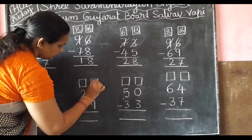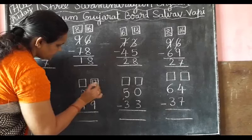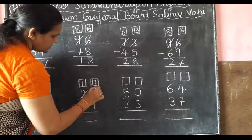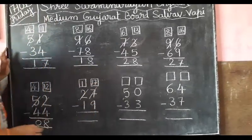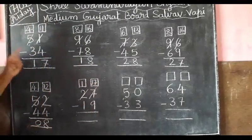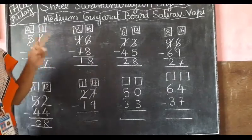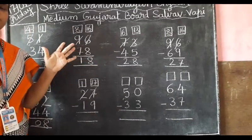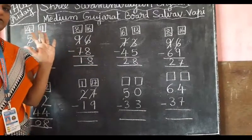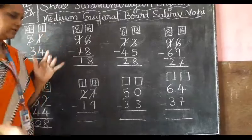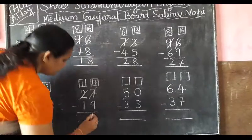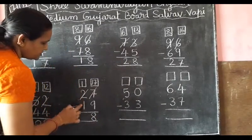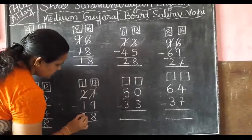Convert directly. And 1 — 17 minus 9: counting 10, 11, 12, 13, 14, 15, 16, 17 — means 8 fingers. And 1 minus 1 equals 0.